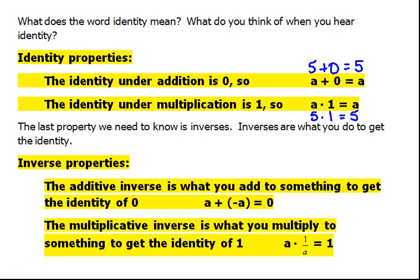The next property is the inverses. And we have to talk about identities before we talk about inverses. Because inverses are what you do to get the identity. So, for addition, the additive inverse or the inverse for addition would be what you would add to a number to get the identity.